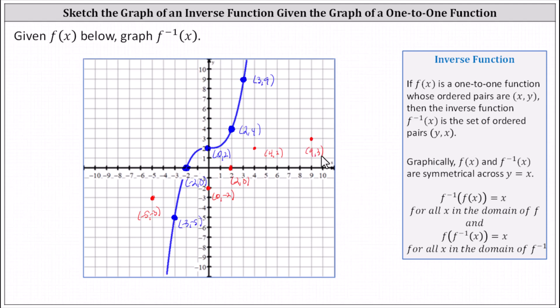The graph of f inverse of x must pass through these five red points. Another property that's helpful to recognize is that if we graph f(x) and f inverse of x on the same coordinate plane, they're reflections across the line y equals x. So let's also graph the line y equals x.